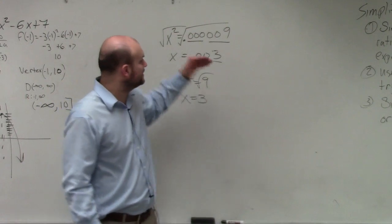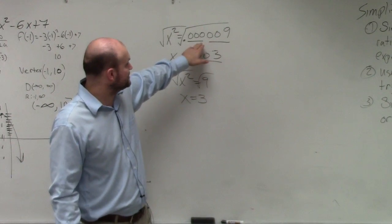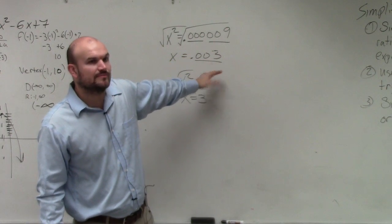If you type it in your calculator and take the square root of 0.0009, you'll get 0.003.